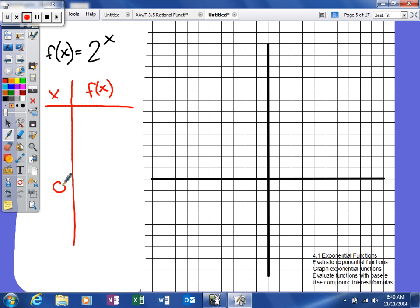The thing I always like to plug in first is 0. 2 to the 0 power - some of you may tell me different answers, but anything to the 0 power is 1. So we're going to graph (0,1). When you plug in 1, you'll have 2 to the 1st, and 2 to the 1st will give us 2.